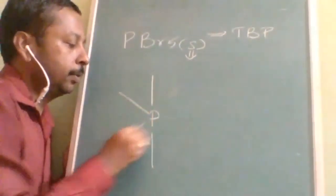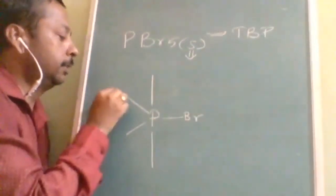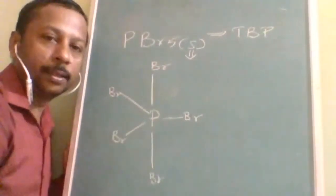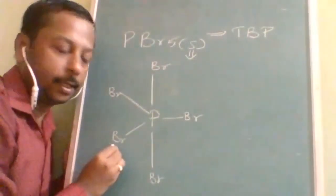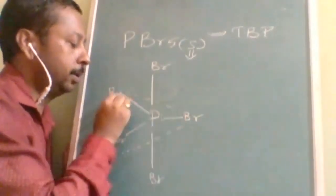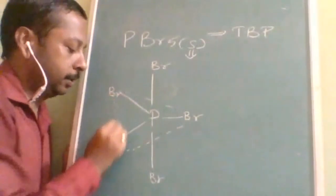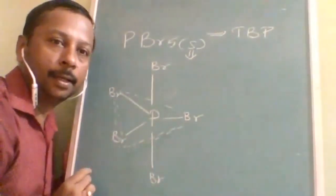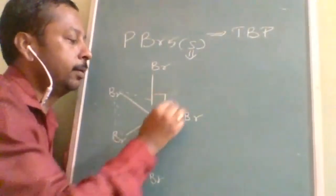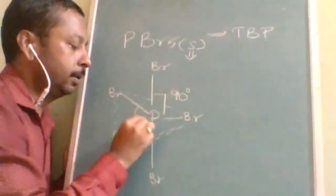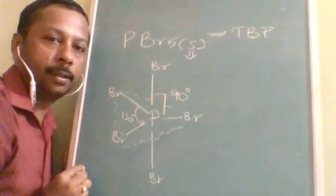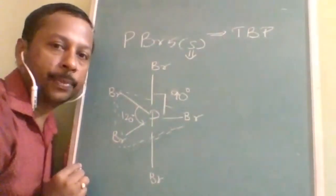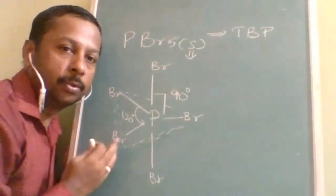This is what trigonal bipyramidal looks like — this is the structure it is supposed to be, but it is not stable. This is a structure that is highly unstable because of the different bond angles: here the bond angle is 90° and here the bond angle is 120°. Due to this difference in bond angles, it is highly unstable.